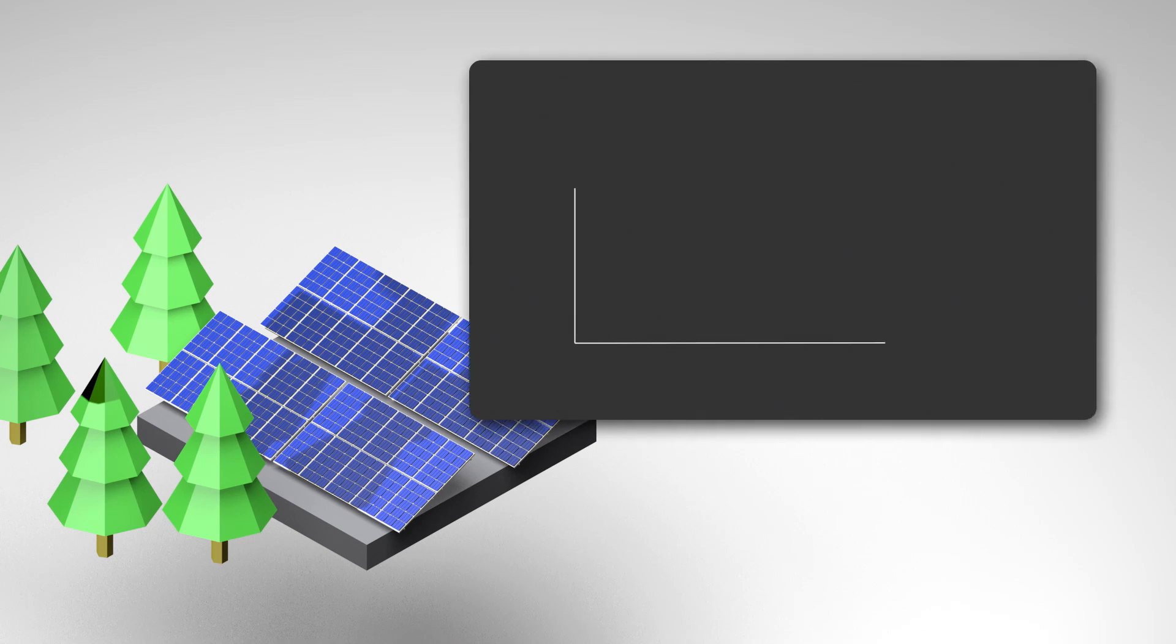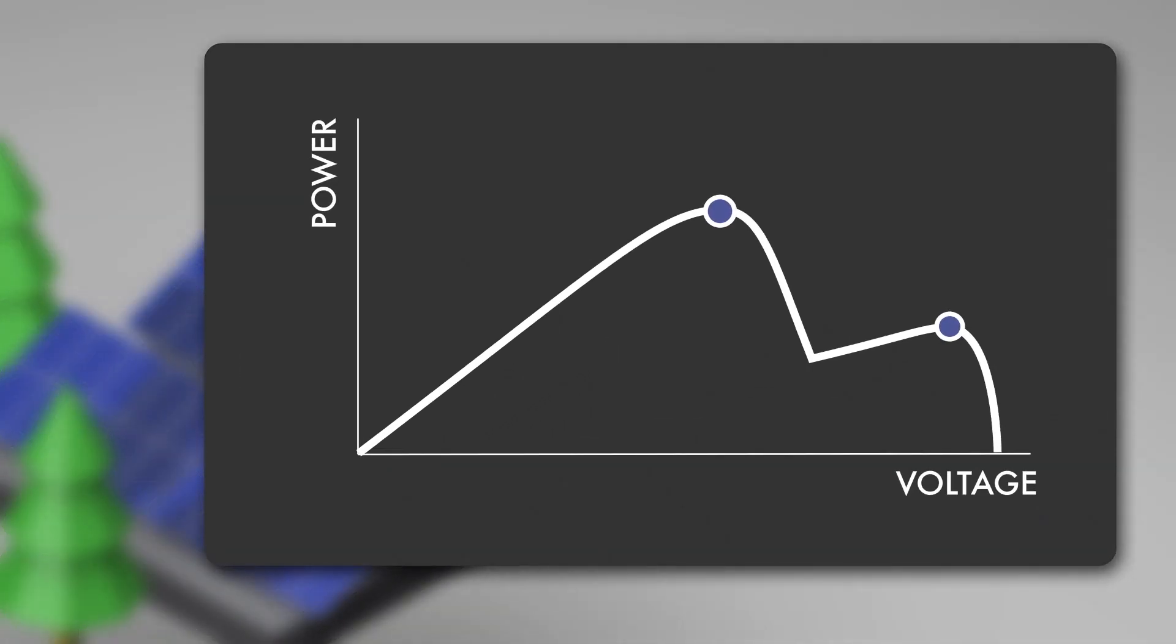In case of shading, the power curve of the PV array changes. It now has several peaks, but not all of them will be found by conventional MPP trackers because they only scan the near range of their current operating point. Consequently, the output of the PV system can be significantly lower than it should be due to the shading.